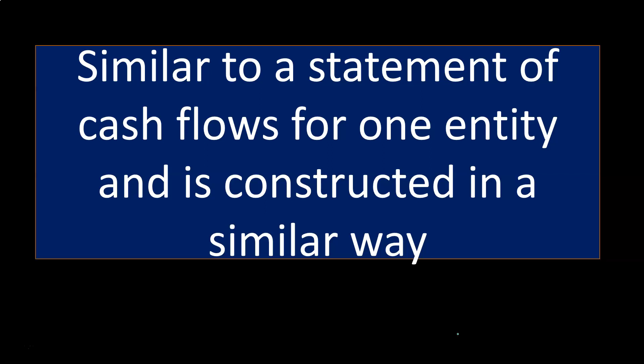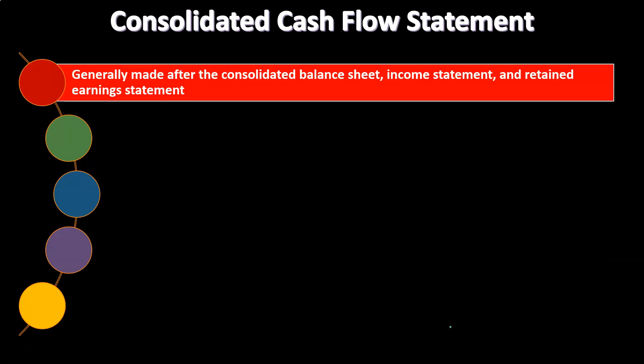With regards to the main financial statements — the balance sheet and the income statement — the Statement of Cash Flows is fairly similar and straightforward to construct compared to a normal Statement of Cash Flows for a single entity. The consolidated cash flow statement is generally made after the consolidated balance sheet, income statement, and retained earnings statement — just like with an individual organization, because we're going to be using those other statements in constructing the Statement of Cash Flows. These are the areas where we'll often see differences with a consolidated entity during the consolidation process and worksheet.